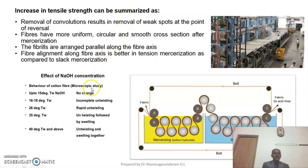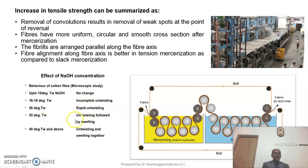Please look at the slide — the effect of sodium hydroxide concentration. At 16 to 18 degrees Twaddell, it gives incomplete untwisting. At 26 degrees Twaddell, rapid untwisting takes place in the cotton fiber. At 35 degrees Twaddell, untwisting followed by swelling takes place. Whereas at 40 degrees Twaddell and above, untwisting and swelling together take place in the cotton fiber.